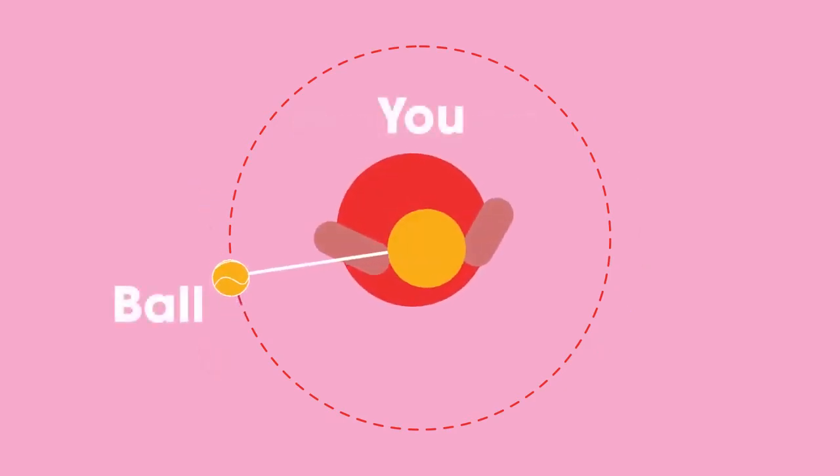You can easily test this by attaching a ball to a string and swinging it round your head. The speed of the ball is constant, but you need to keep pulling the string to make it go in a circle. What direction do you think the ball will follow if you suddenly let go of the string?